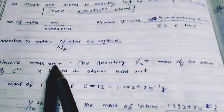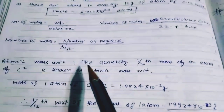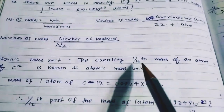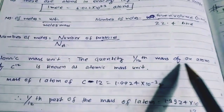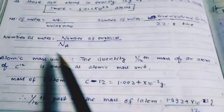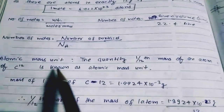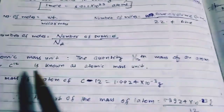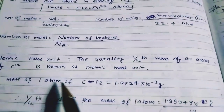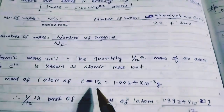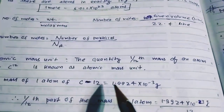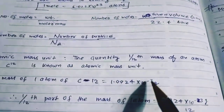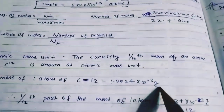Atomic mass unit: 1 by 12th of the mass of an atom of C-12 is known as atomic mass unit (amu). The mass of one atom of C-12 is equal to 1.9924 into 10 to the power minus 23 gram.